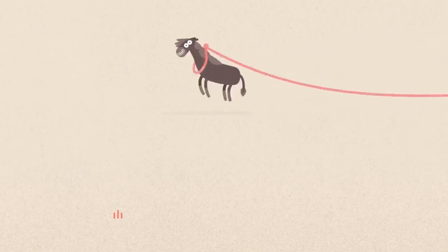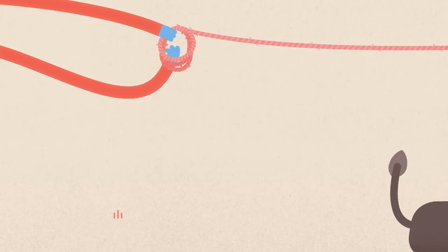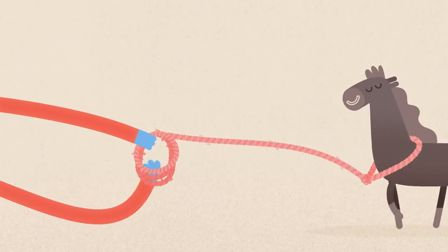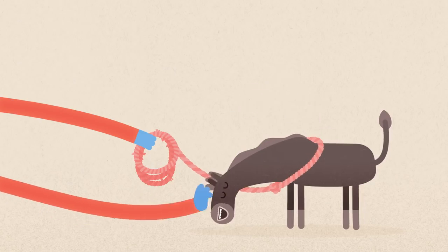The horse runs around, feeling like it's got all the space in the world. But very slowly, the rope's brought in, and the horse adjusts to this feeling, until it comes to a natural place of rest.